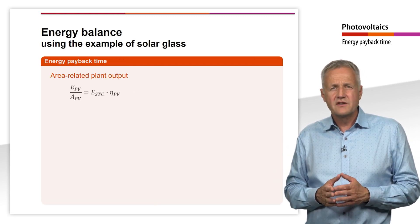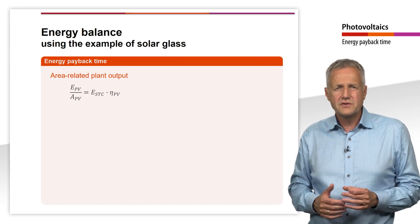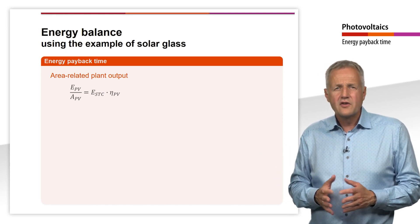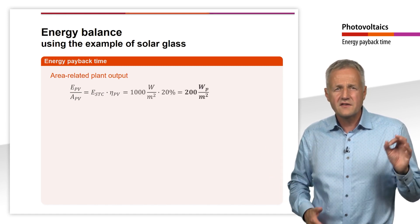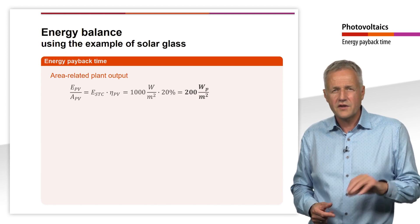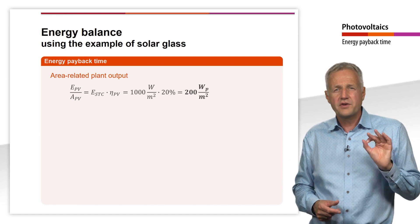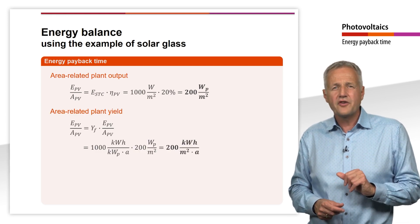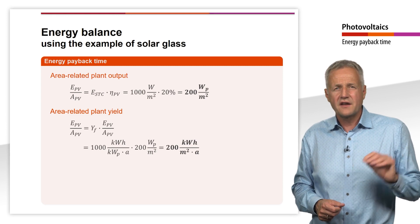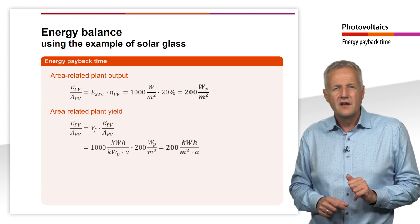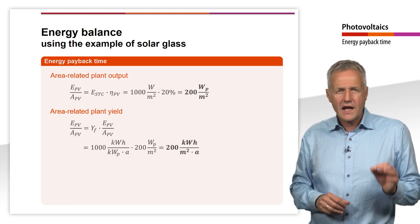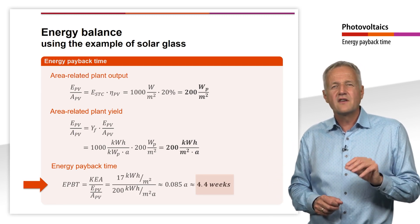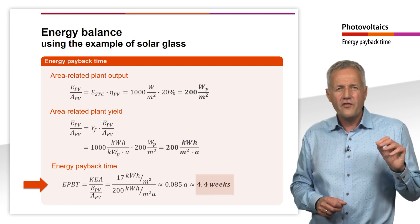To calculate the payback period, we also need the energy yield of the PV system in which the solar glass is installed. We consider a plant in southern Germany. We assume a module efficiency of 20%, meaning that the modules at STC — at 1000 W per square meter — produce an output of 200 W peak per square meter. For a plant in southern Germany, we assume a specific annual yield of 1000 kWh per kW peak, so we can expect an annual yield of 200 kWh per square meter. Putting this in relation to the area-specific cumulative energy demand of 17 kWh per square meter, the result is 0.085 years, or 4.4 weeks.